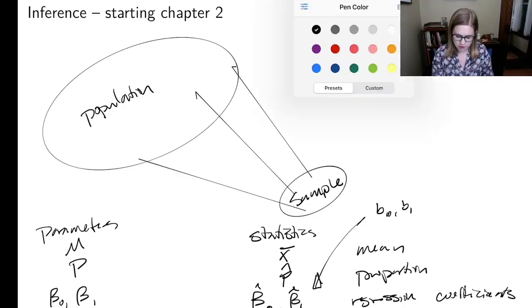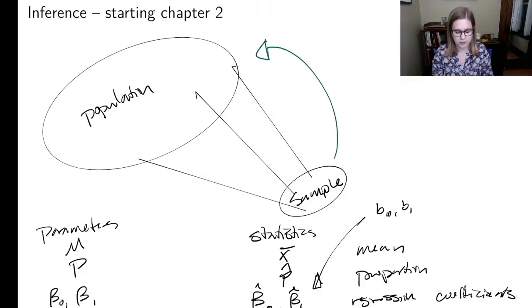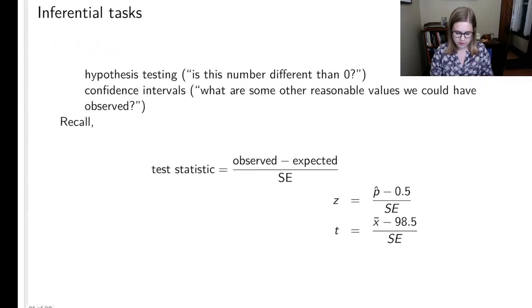So inference is the process of trying to draw conclusions about the population based only on information about the sample. There's kind of two main inferential tasks that we do: hypothesis testing and confidence intervals. I usually say that the question we're asking with hypothesis testing is, is this number different than zero? And with confidence intervals, we're asking what are some other reasonable values we could have observed?